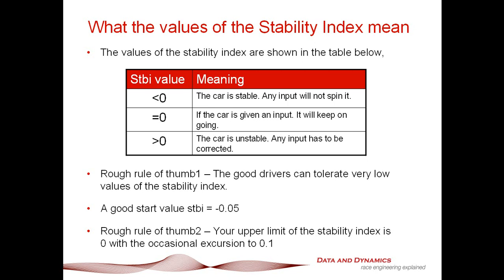Particularly if you've gone beyond zero, you've got to take action pretty quick smart. Good drivers can tolerate very, very low values of the stability index — we're talking values of about minus 0.01. If I was to set up a car and saw anything above that, I would start to get very, very nervous, and I would say a race car driver has got something genuine to complain about. A good value of the stability index is about minus 0.05. You can go to about zero, but from my experience and my colleagues', you can go to about minus 0.01. You might have the occasional excursion to about 0.01, but the operative word here is an excursion to about 0.01.